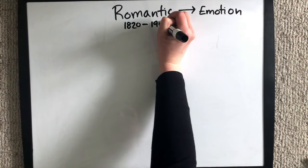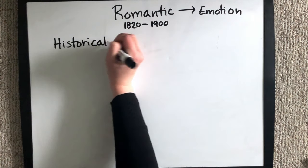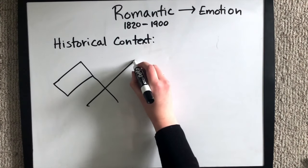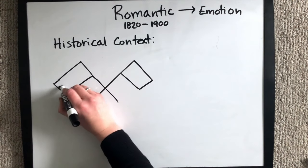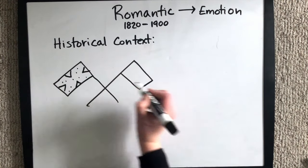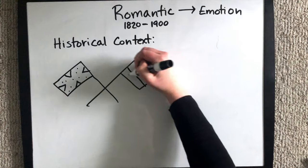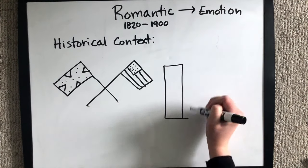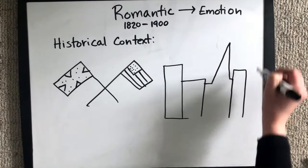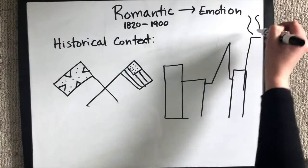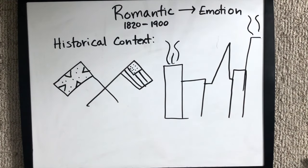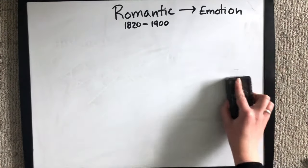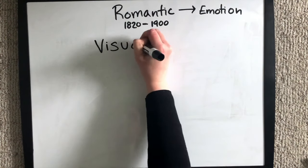The romantic era spanned from the year 1820 to 1900. For historical context, in the U.S. there was the Civil War, and all over the world there were countries fighting for independence. There was also the booming industrial revolution, which made instruments easier to manufacture and more readily available to the world as a whole.